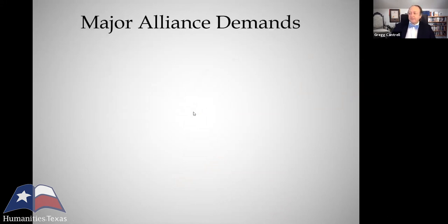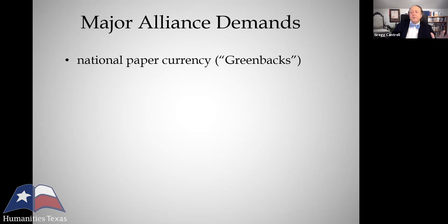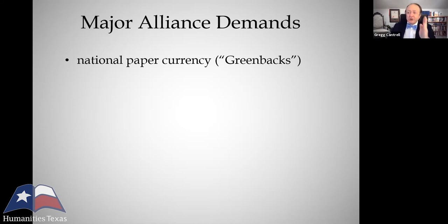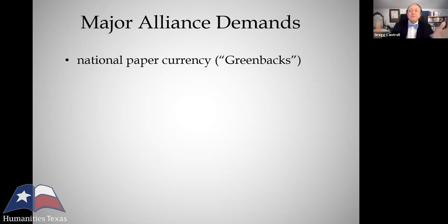At the national level, the Alliance then hammered out a series of political demands. First, they demanded the creation of a national currency — in other words, paper money, the old greenbacks, issued directly by the federal government, not backed up by gold. This would take the country off the gold standard and enlarge the supply of money, which again by the laws of supply and demand, with more money in circulation, the amount charged to borrow that money — interest — would go down.